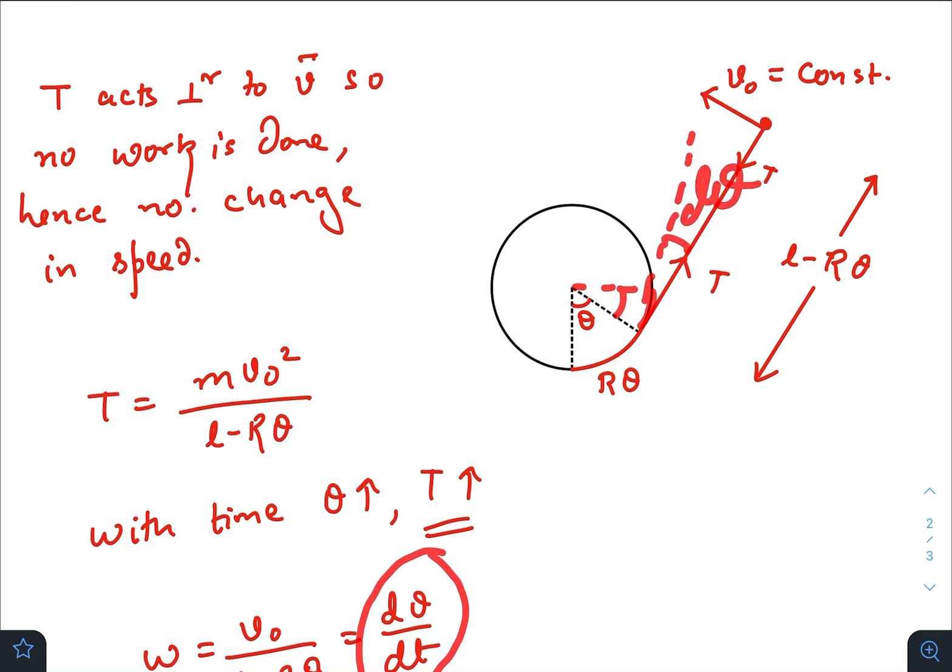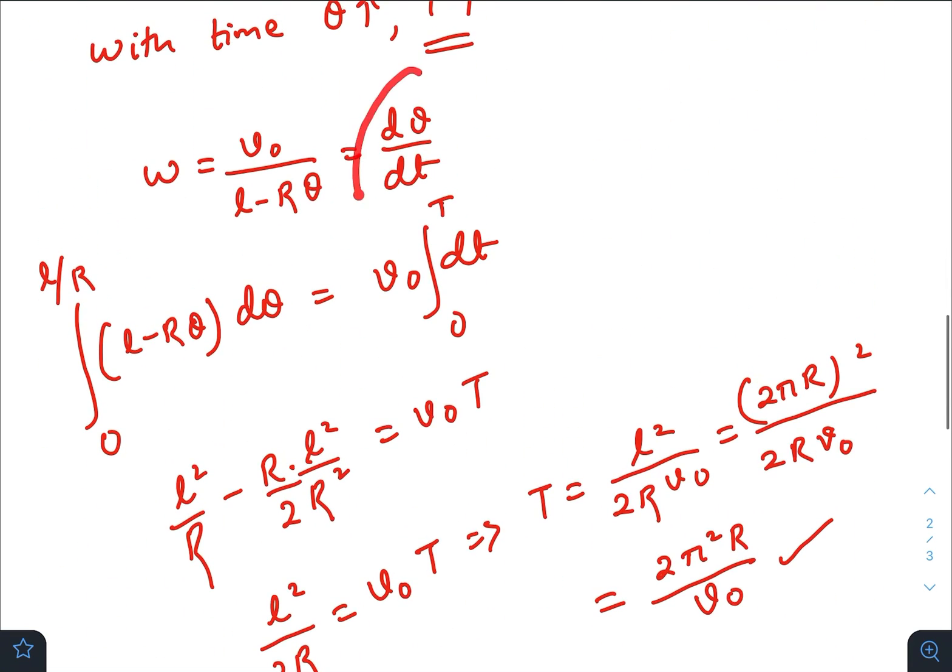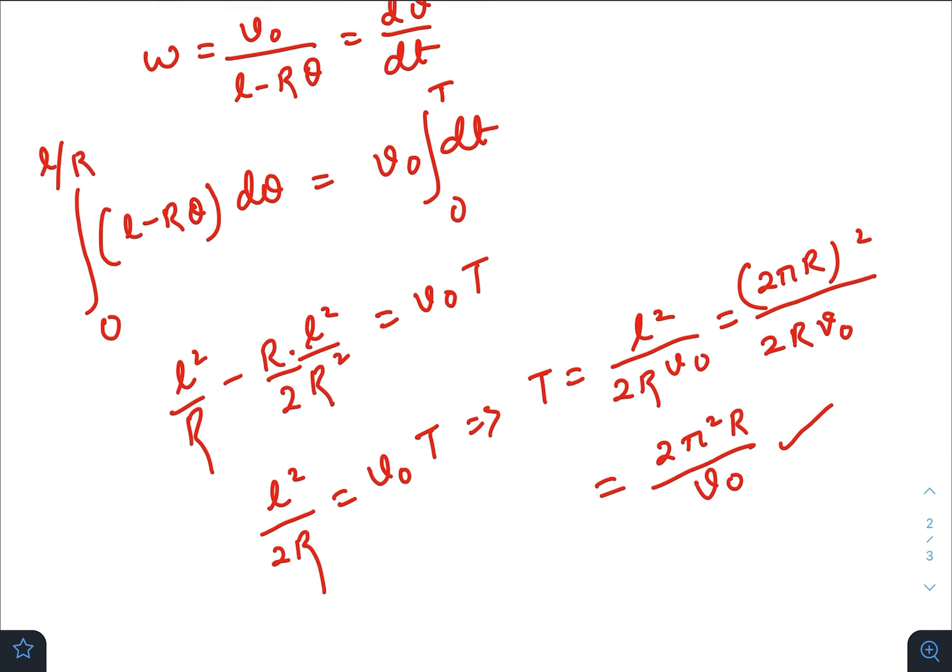So you can write dθ/dt. Now just integrating θ from 0 to l/R, because when the whole string wraps the cylinder of radius R it will be l/R, taking a time t. So after integrating you get t equals l²/(2Rv₀).